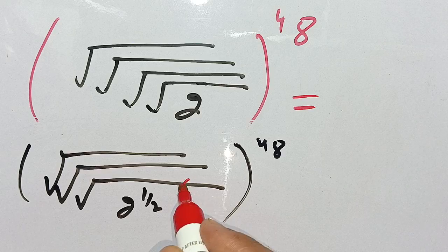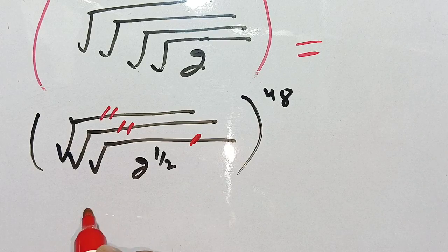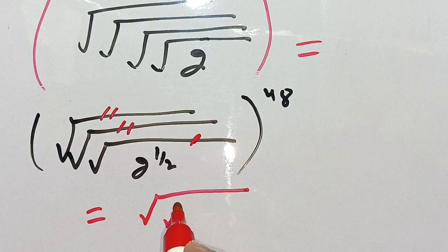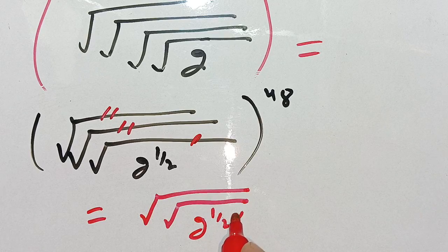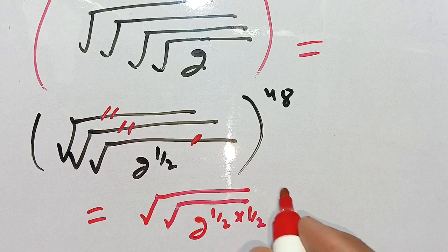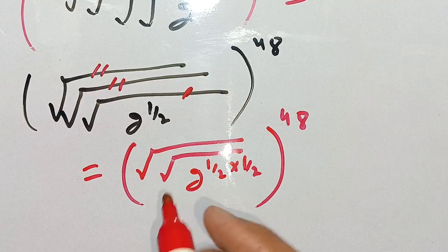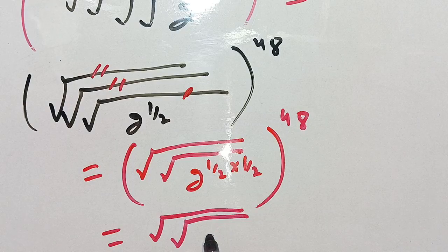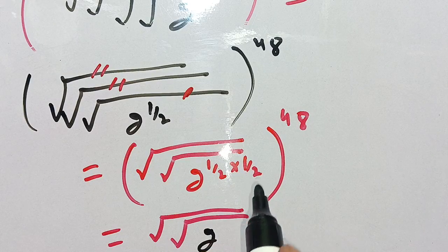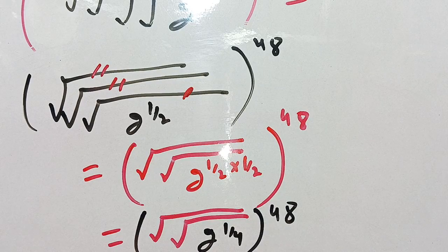We evaluate this square root and keep the two remaining square roots as they are. We get 2 to the power 1 divided by 2, times 1 divided by 2, which equals 1 divided by 4, and bracket power 48 as it is.